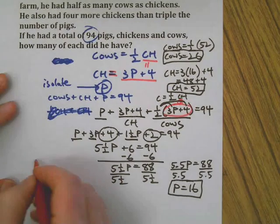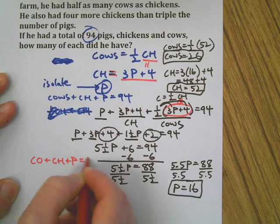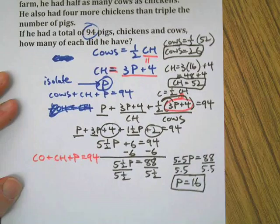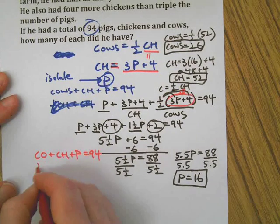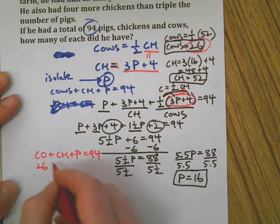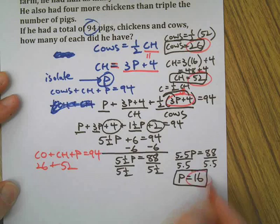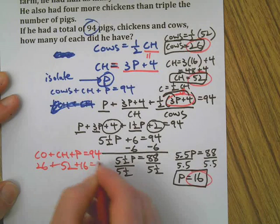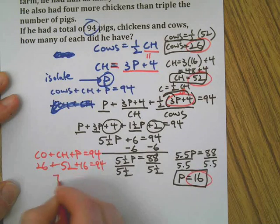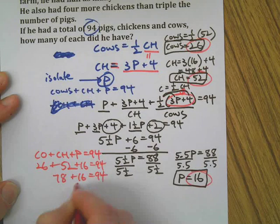Let's check this out. Cows plus chickens plus pigs equals 94. This is our final proof to test our answers out. We got 26 up there, we have 52 right there, and 16 right there. Does that equal 94? You know it does.